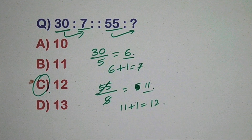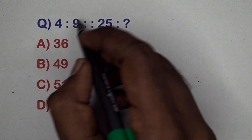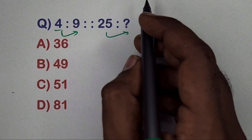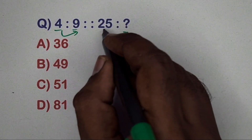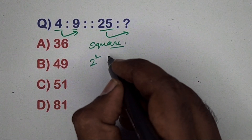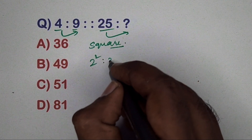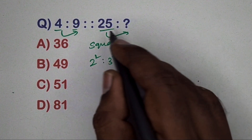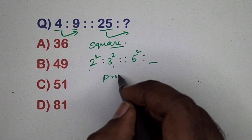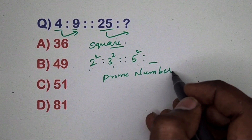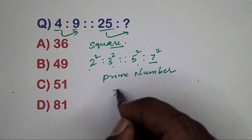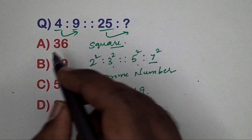Next question: 4 related to 9, 25 related to which number? Take 4, 9, 25 — these are squares: 2 squared, 3 squared, 5 squared. So 2, 3, 5 are prime numbers. The next prime number is 7, so 7 squared equals 49. Option B is the correct answer.